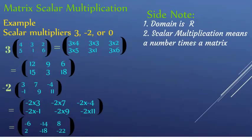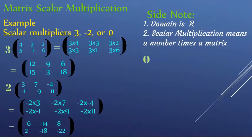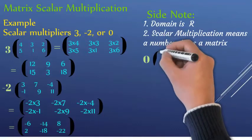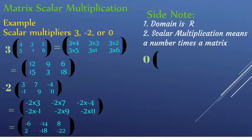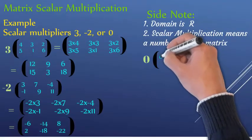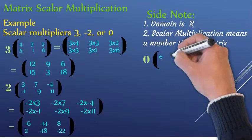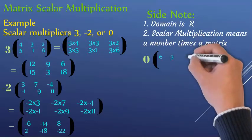Next: minus two times three is minus six. Minus two times seven is minus fourteen. Minus two times four is minus eight. Minus two times five gives minus ten. Continuing the scalar multiplication of minus two across each matrix entry.